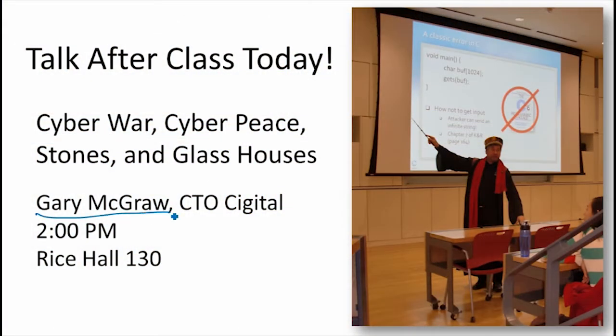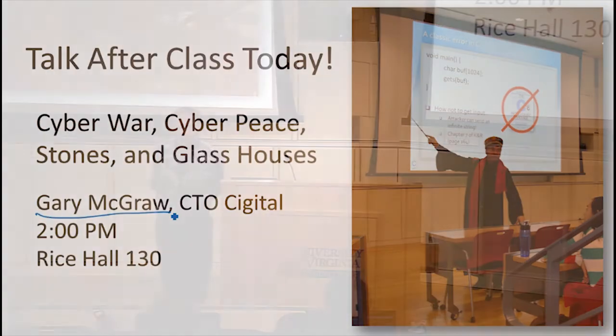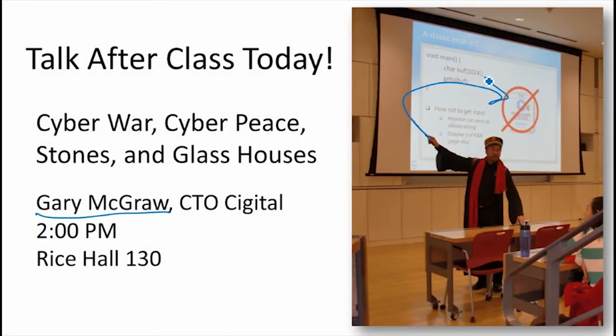The other thing I want to mention: after class today, in this very room, Gary McGraw will give a talk. Gary was a founder of a company in Northern Virginia that does software security consulting — companies hire them to figure out how to make their code more robust and especially more secure. You should also take advantage of the opportunity to ask him why he lets companies continue to write code in obsolete languages that don't provide memory safety and type safety. Part of his philosophy is about designing things to be secure from the beginning rather than trying to patch them. He's a really entertaining speaker, so I encourage you to stay around for that.